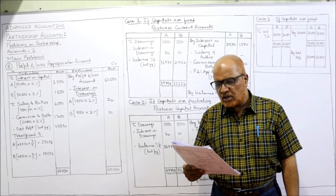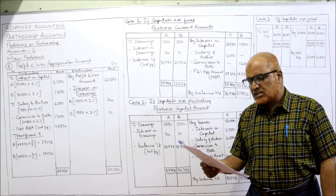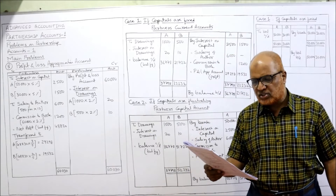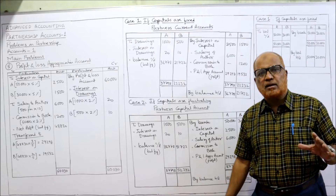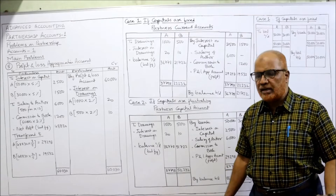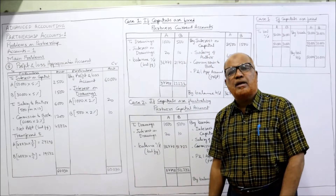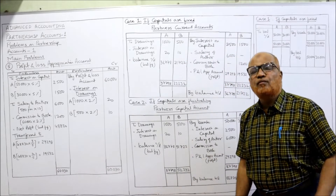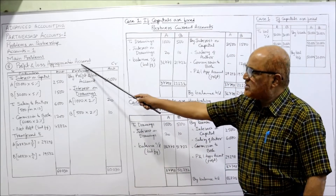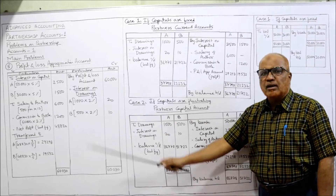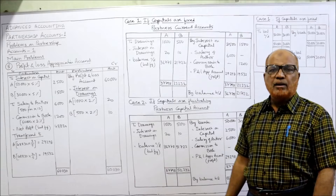You are required to prepare the profit and loss appropriation account for the year ended 31st December 2005 and partners' capital accounts under two cases: when capitals are fixed and when capitals are fluctuating. First of all we need to make the appropriation account to find out the divisible profit and share it between the partners.